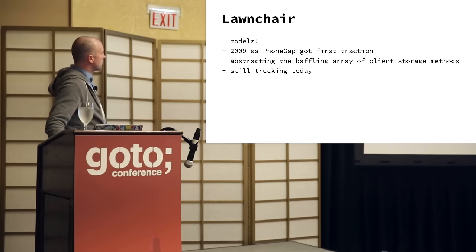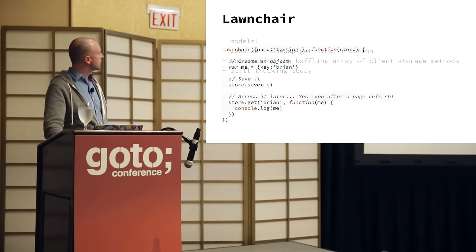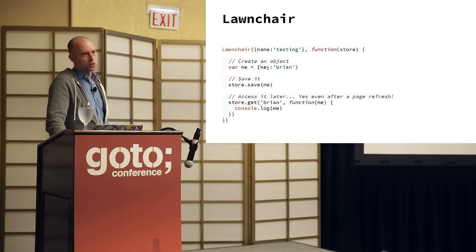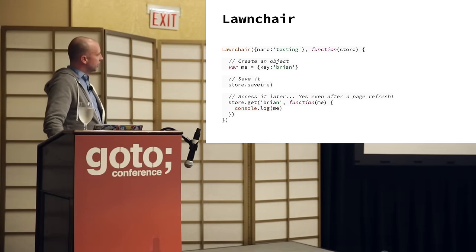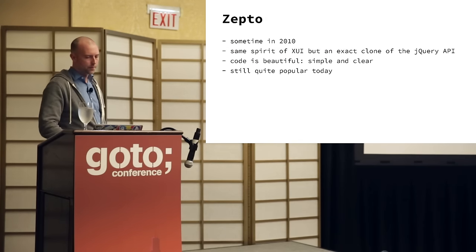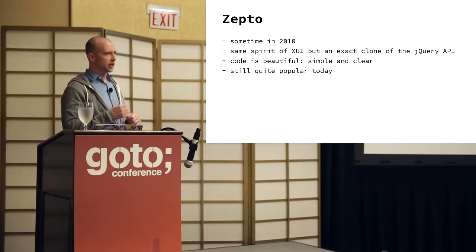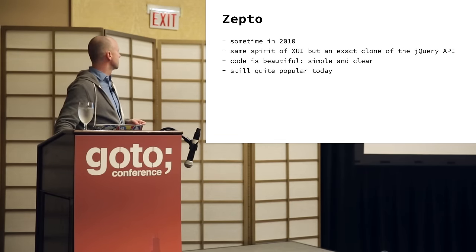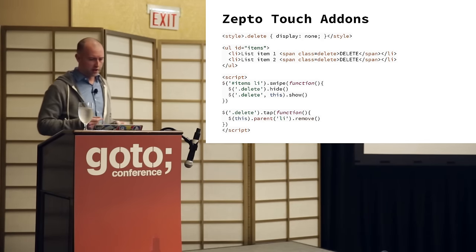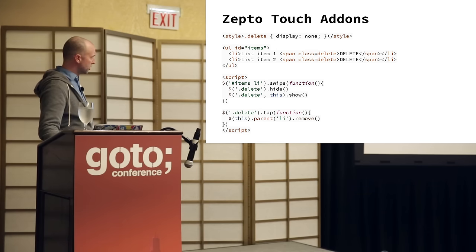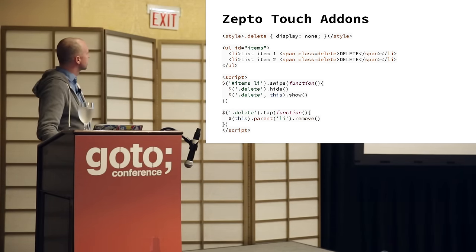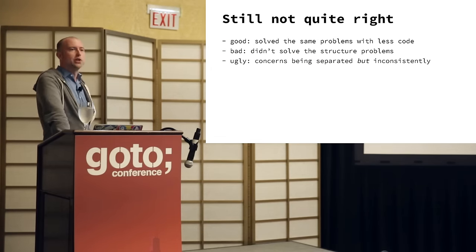Lawnchair was another project I worked on — it had the concept of models, where you'd get and set data using local storage, WebSQL, or other things that can store stuff in the browser like window.name. Thomas Fuchs from Scriptaculous saw XUI and thought he'd do the same thing but clone the jQuery API, creating Zepto. Zepto is really nice and still popular in a lot of mobile applications — worth reading the source code. jQuery today is also really well-maintained, battle-tested, and they've slimmed it down substantially. But either way, this is just redoing the same thing over and over, and we as a collective consciousness realized that if we keep doing the same thing, we'll keep having the same problems.